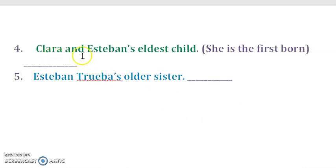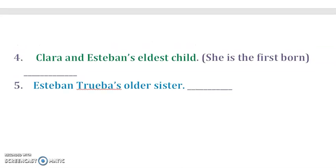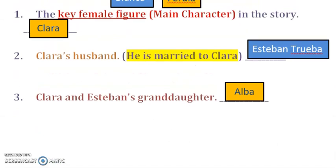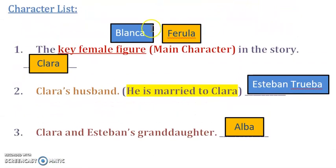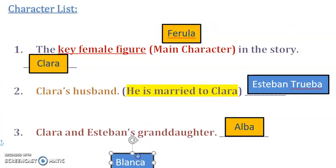So Clara and Esteban's eldest child — who is Clara and Esteban's eldest child? She is the firstborn of Clara and Esteban in this story. Who among Blanca and Ferula is it? In five, four, three, two, one. The answer is Blanca.